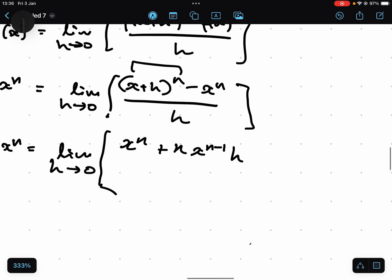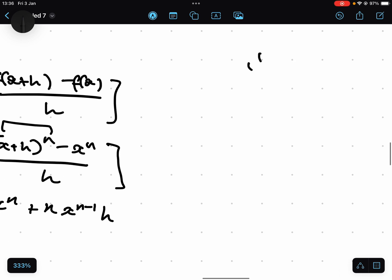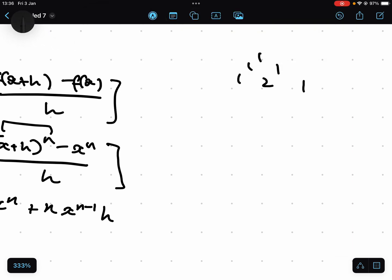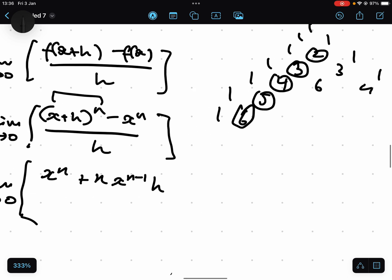And the constant next to it is going to be n. If you remember from Pascal's triangle, for example, this is Pascal's triangle. The point is the second term is always just going to be one higher: 2, 3, 4, 5, 6. So that means it's always just n.